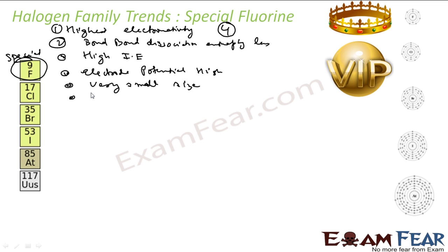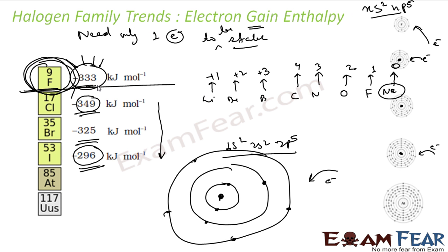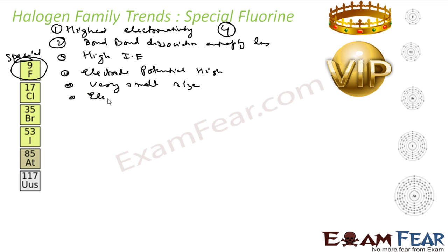The electron gain enthalpy of Fluorine is quite lower than expected. The expected value should be around minus 400 kJ/mol, but actually it is lower than that. Why? Because there is repulsion in the 2p orbital — the 2p orbital itself is small and already has 5 electrons, so repulsion occurs and thus the electron gain enthalpy is lower than expected.